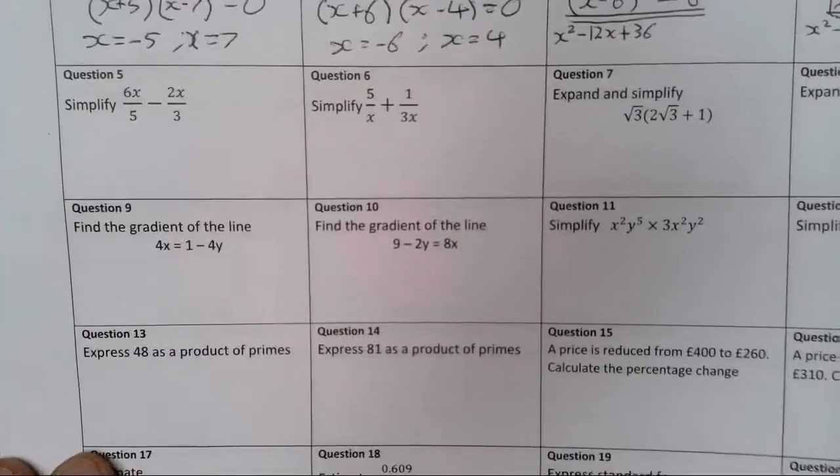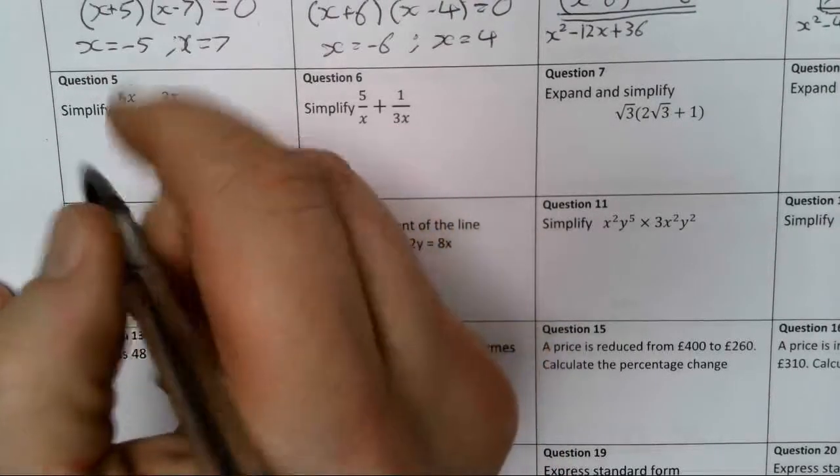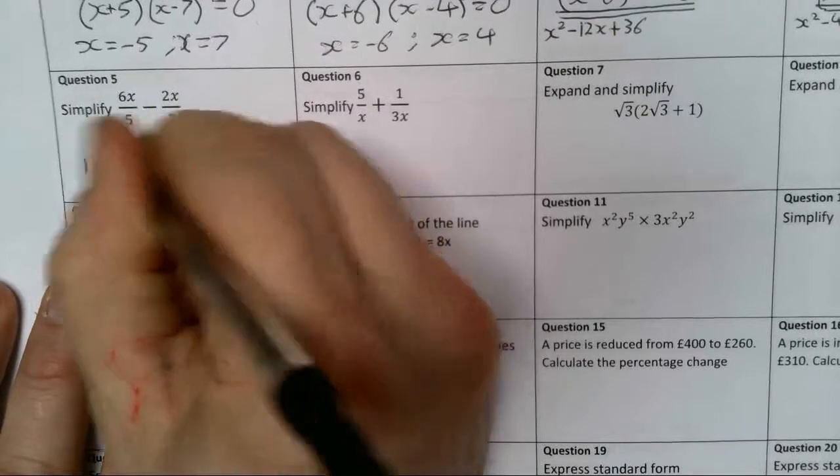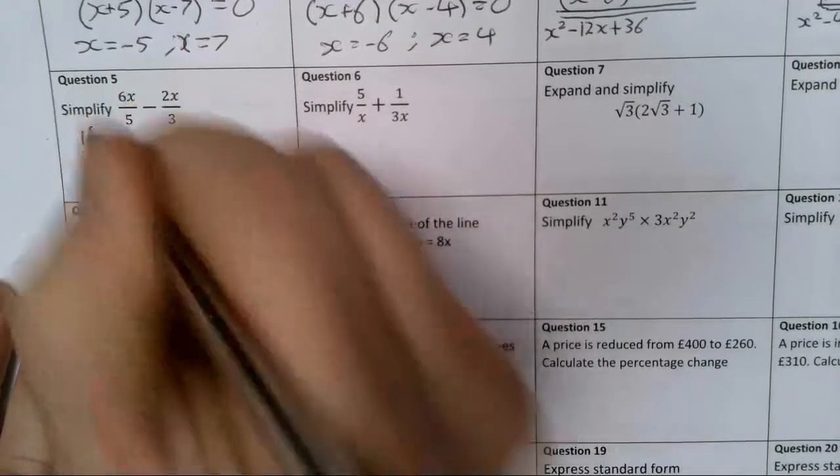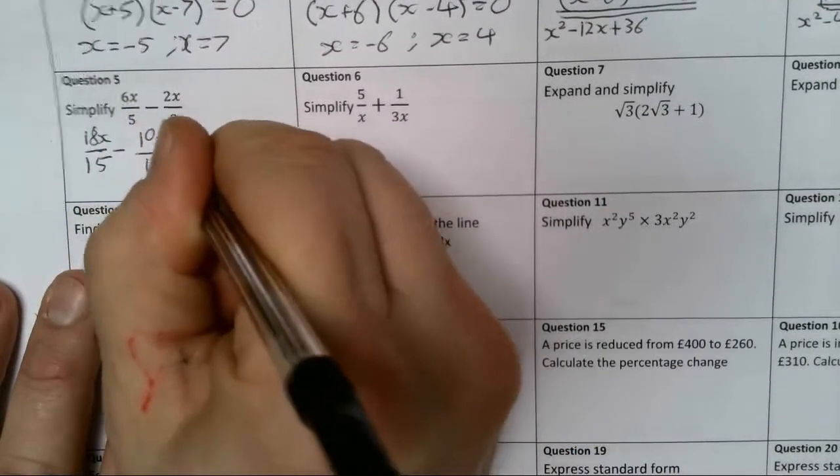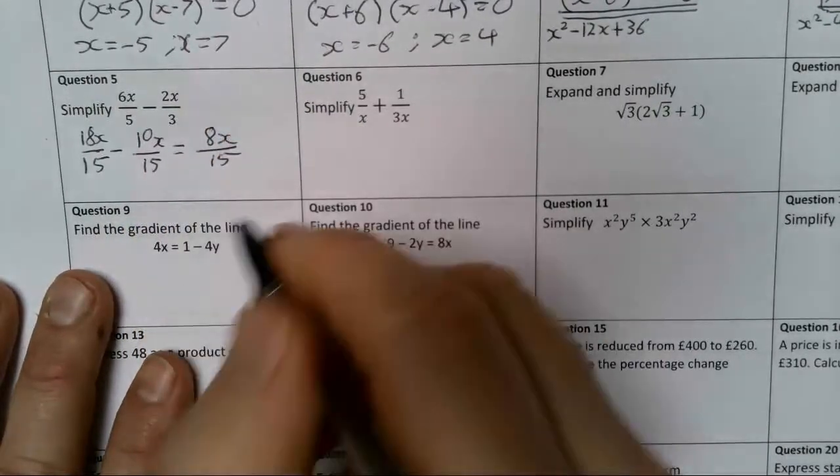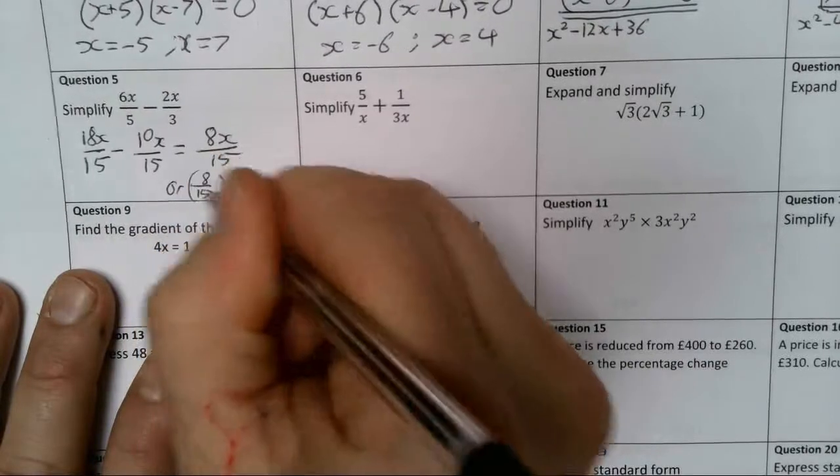Question 5. Common denominator here is 15, so let's put them both over 15. Times by 3, times by 3, 18x. Times by 5, times by 5, 10x. So that's going to give me 8x over 15, or 8/15x. You need to be able to use those interchangeably.